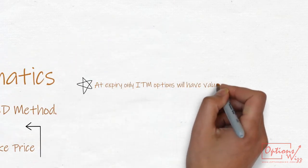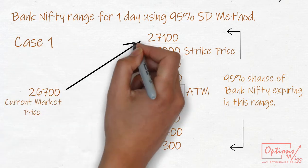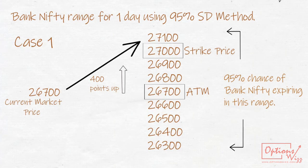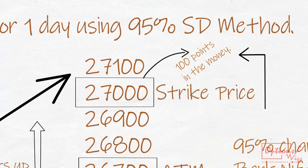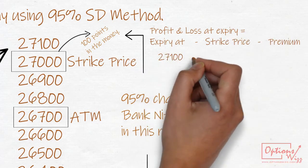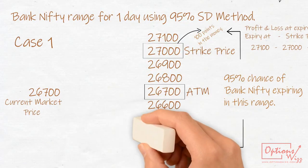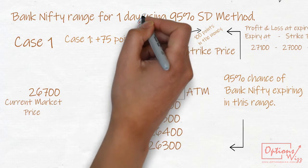Remember, at expiry, only ITM options will have a value. Let's do the case study. Case 1: Bank Nifty expires at 27,100, 400 points above current market price. In this case, 27,000 call will be 100 points in the money. So 27,000 call will have a premium of 75 rupees. Here you are risking 25 points for a reward of 75 points. So risk reward ratio is 1 is to 3, that is whopping 300% profit. You will really be a hero in this case.